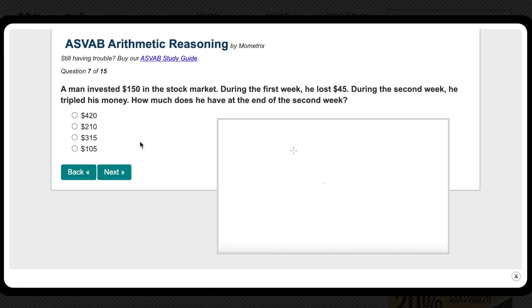Now let's come up with an equation. Let's just start off with what we know. He starts off with $150, but then he lost $45. So let's subtract $150 minus $45, which is $105. Then in the word problem, it tells us he tripled his money. So that means we have to multiply this number, 105, by 3, which equals $315. And that is actually our answer. This means he has $315 by the end of the second week.